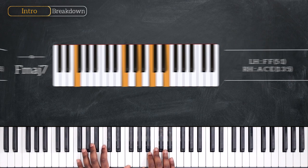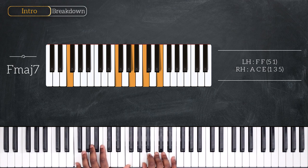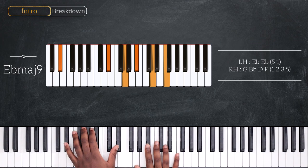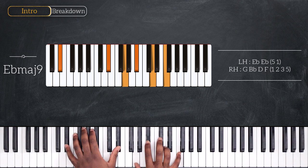Then we have F major 7. Octave F, A, C, E. Back to E flat with E flat major 9. So the same notes, but now instead of playing G flat we have G, and instead of playing D flat we have D.